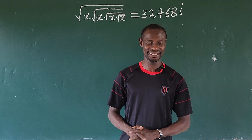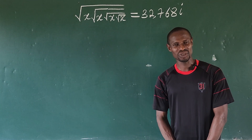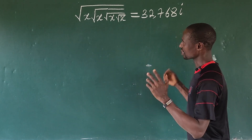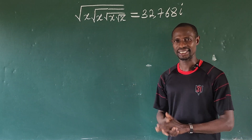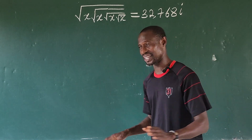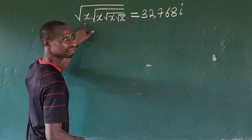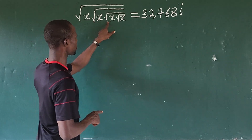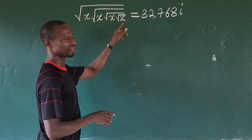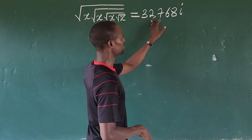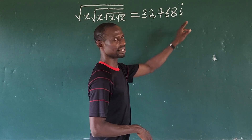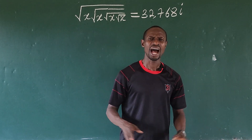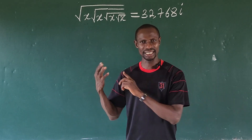Welcome to today's class. Look at the question before us. At first when I saw this question I was taken aback, but after much consideration I was able to break it down and it's very easy. The question is: the square root of X, under which again the square root of X, under which again the square root of X, times the square root of X, equals 32,768 iota. How do we solve for the value of X in this challenge?